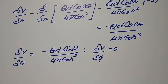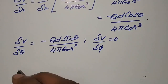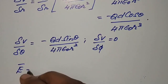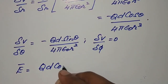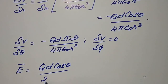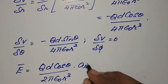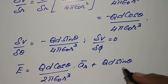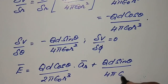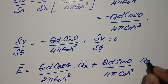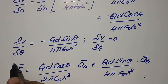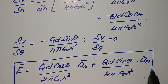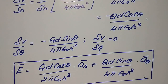Substituting all the partial derivatives into the E vector expression, we finally get E = q·d·cosθ / (2πε₀·r³) · aᵣ + q·d·sinθ / (4πε₀·r³) · a_θ. This is the entire electric field for a dipole. Thank you.